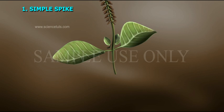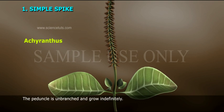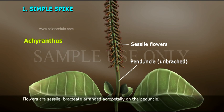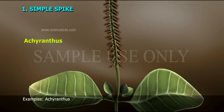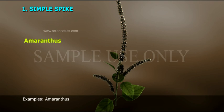Simple spike: The peduncle is unbranched and grows indefinitely. Flowers are sessile, bracteate, arranged acropetally on the peduncle. Examples: Achyranthes, Amaranthus.